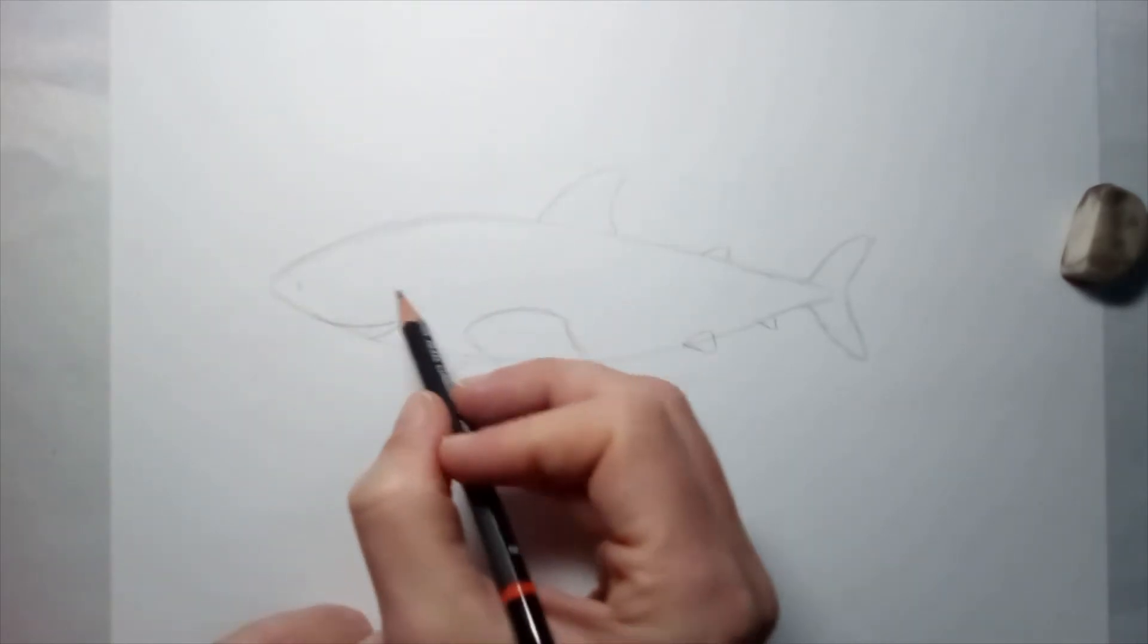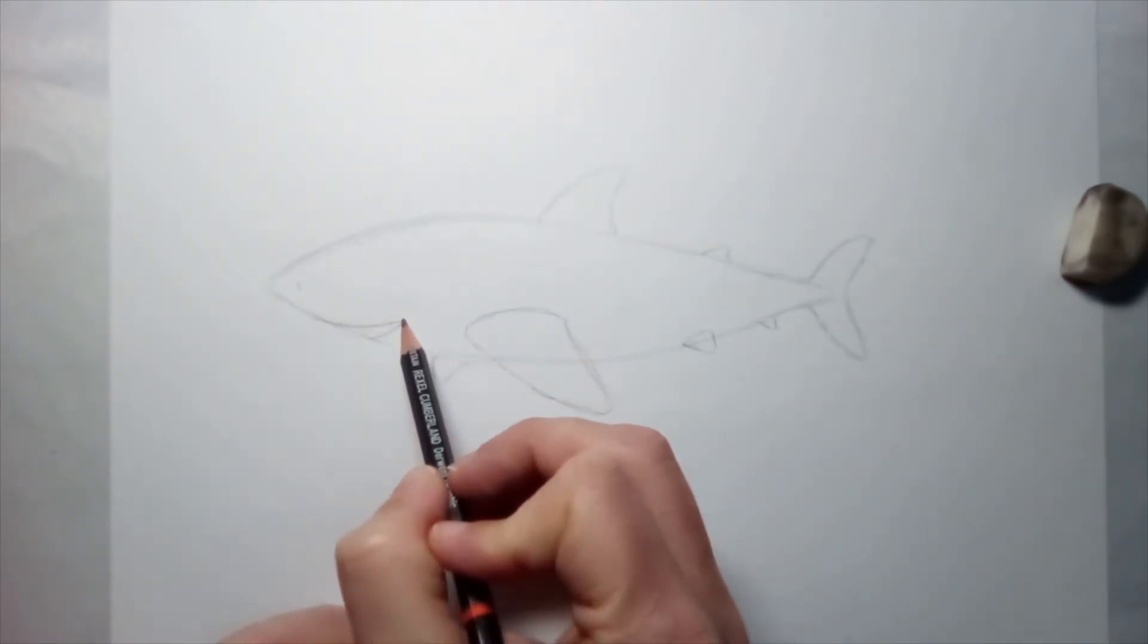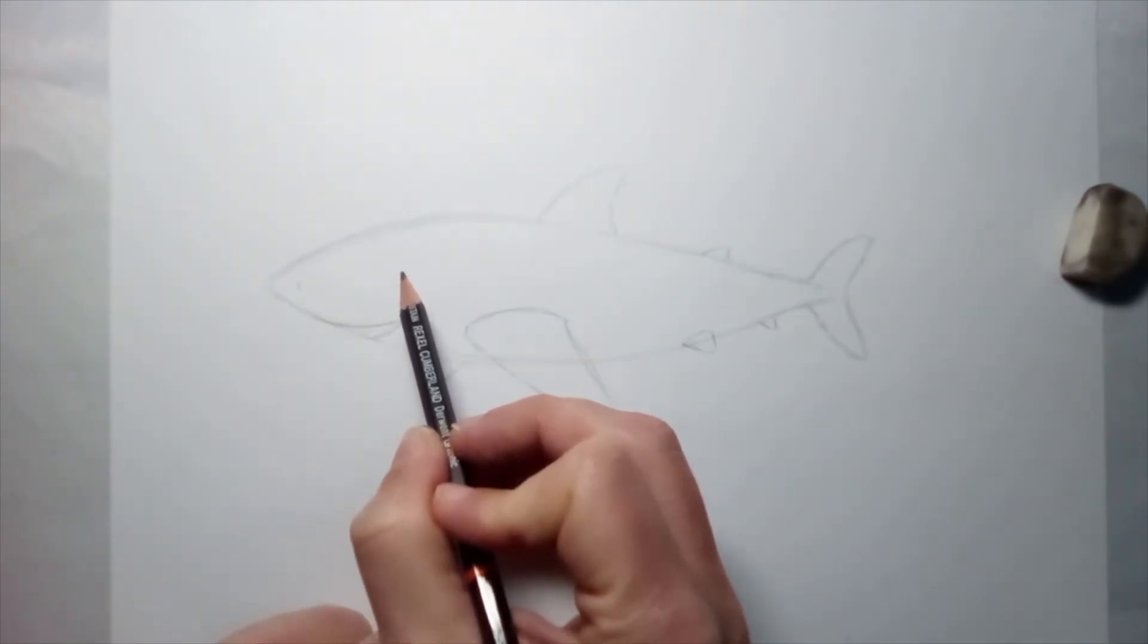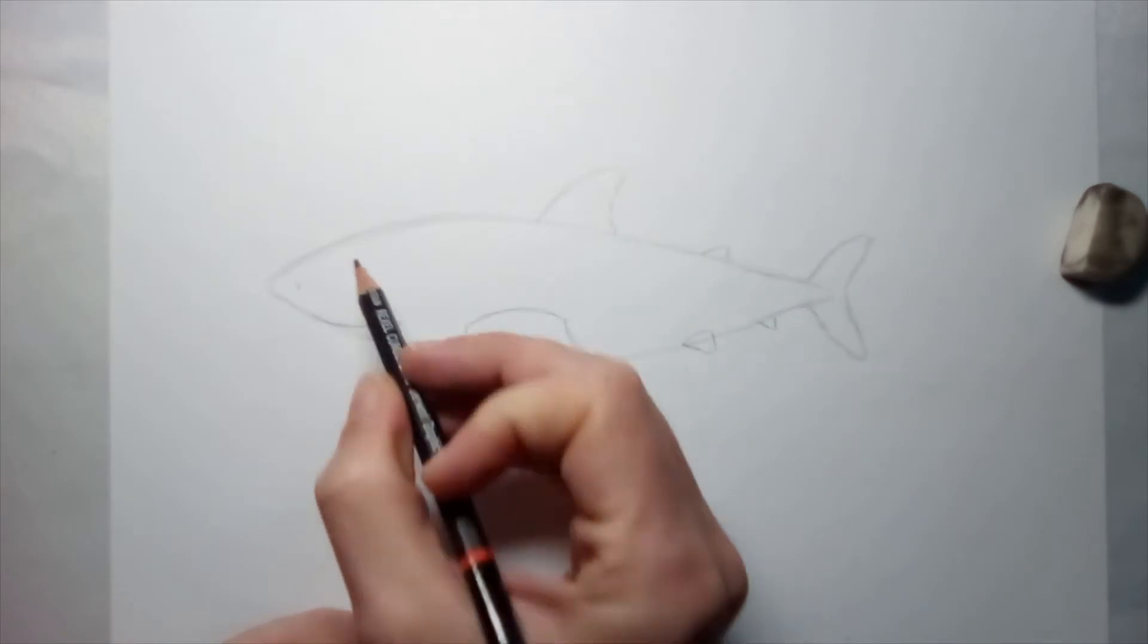You want the eye to be not directly above the end of the mouth - that's too far back. You want it to be about halfway between the end of the mouth and where the nose is, so somewhere around here.